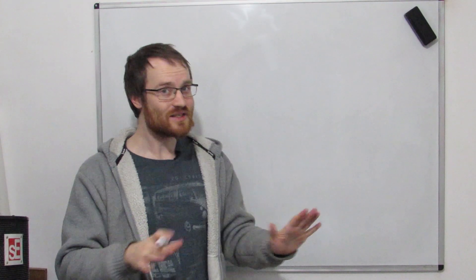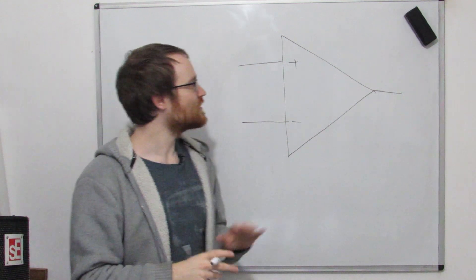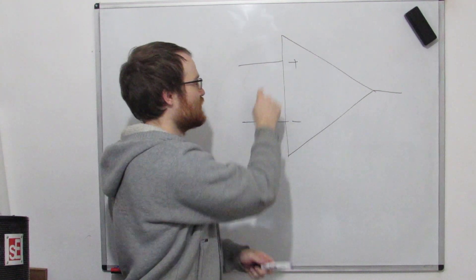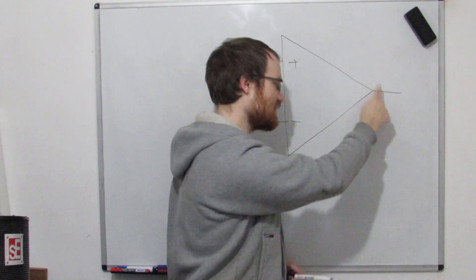We're going to start with the most basic op-amp circuit that you can get. So let me just explain this very quickly. This is an op-amp circuit. So we've got two inputs: we call this the non-inverting input, this is the inverting input, and this is the output.